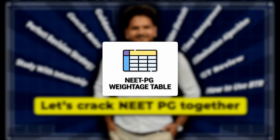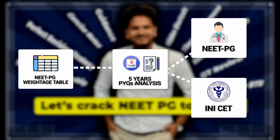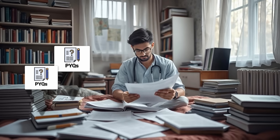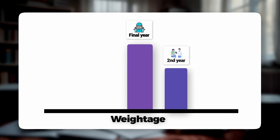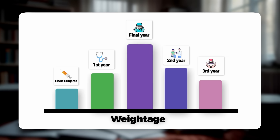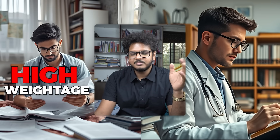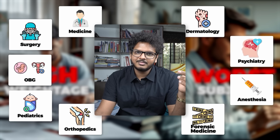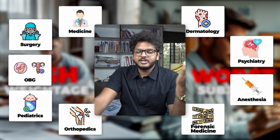The next point is to divide subjects based on their weightage. In my NEET PG success blueprint, I've given an exact table showing which subjects had how many questions in the last five years of NEET PG and INICET. Final year and second year subjects have the most questions, followed by first year and third year, and lastly short subjects. Start from final year subjects — medicine, surgery, OBGY, pediatrics, orthopedics — then second year, first year, third year, and finally short subjects. Take a two-sword approach: start with subjects having the most questions, and also start with your weakest subjects.